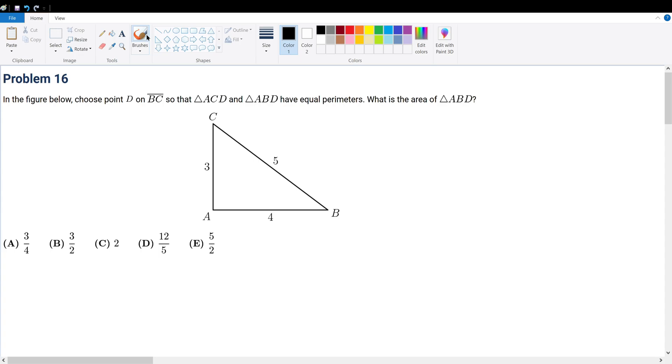Problem 16. In the figure below, choose point D on side length BC such that triangle ACD and ABD have equal perimeters. What is the area of ABD?